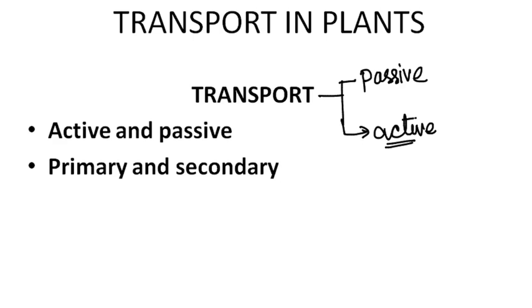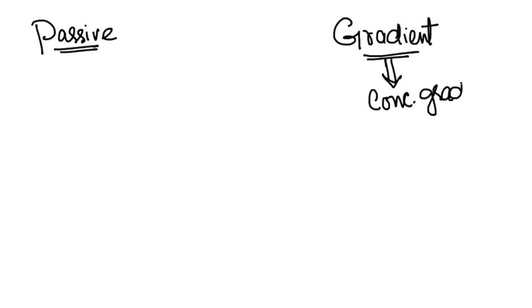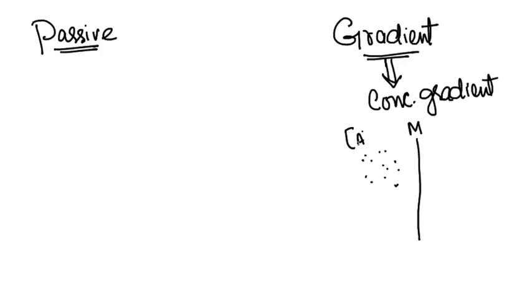Let's first understand passive transport. To understand passive transport, we need to understand the gradient — specifically the concentration gradient. If we have a membrane separating two sides, and molecule A has a high concentration on one side but low concentration on the other side, that difference in concentration is called the concentration gradient.